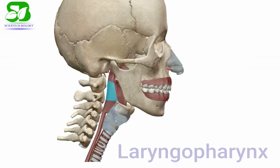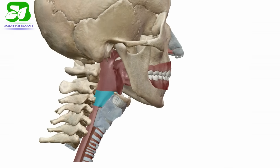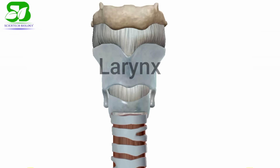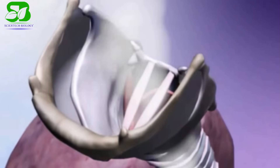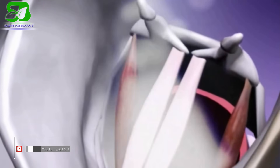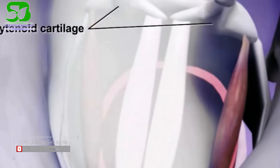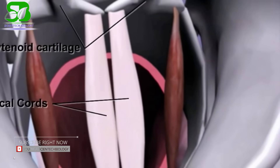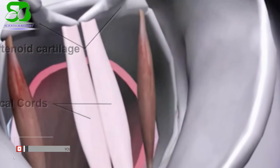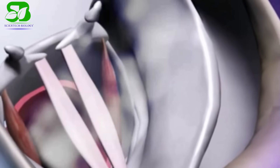The larynx is an organ of complex structure that serves a dual function as an air canal to the lung and as the organ of phonation. The skeletal framework of the larynx consists of cartilages connected by membranes.